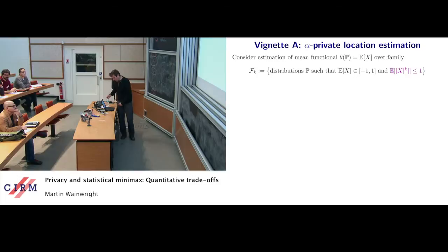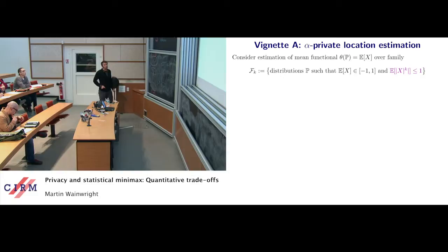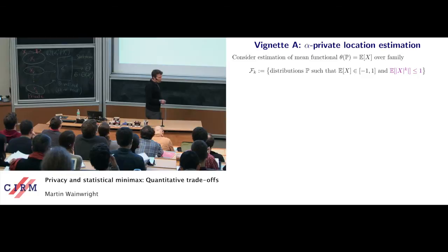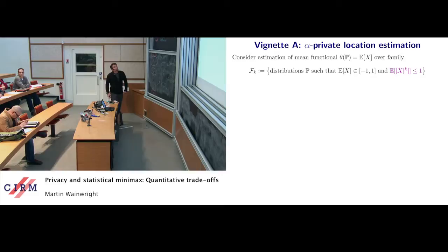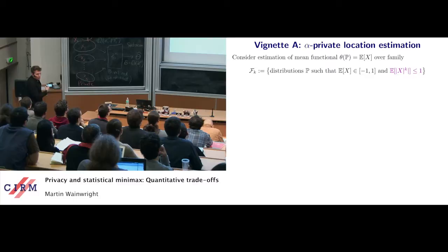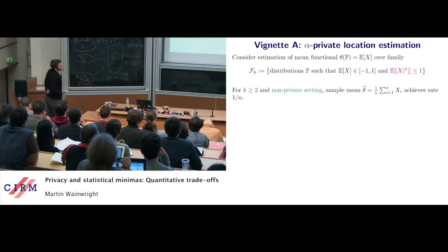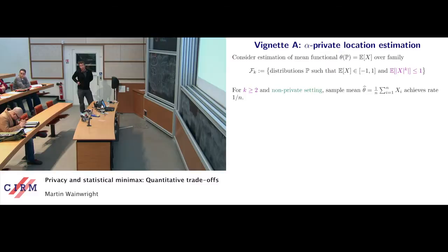Let's do a warm-up — one simple problem that illustrates interesting things that can happen with this model. We're going to consider estimating the mean over the set of distributions F(K), K an integer, such that the mean belongs to [-1, +1] and the K-th moment is less than or equal to one. These are nested families; as K goes up, you're restricting the family more. In the non-private setting, this is trivial — just do the sample mean — and it achieves a rate of 1/N, which is optimal.